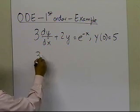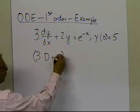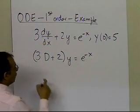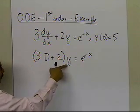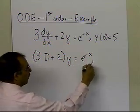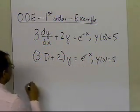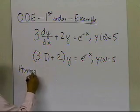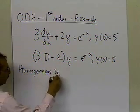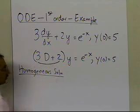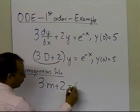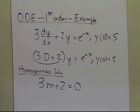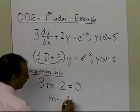The homogeneous part can be found by writing this differential equation using the operator notation. Since D stands for the first derivative operator, we write the operator 3D plus 2 on y, equal to e to the power minus x, with y(0) equal to 5. The characteristic equation is 3m plus 2 equal to 0, giving m equal to minus 2/3.